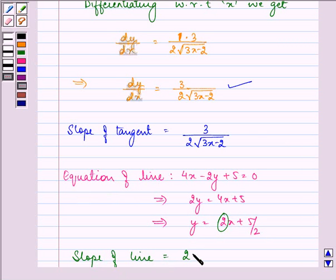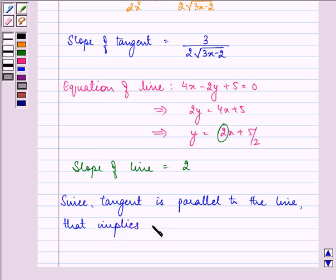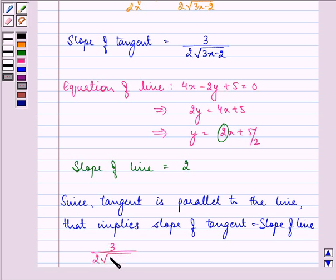Now, since the tangent is parallel to the line, slope of tangent is equal to slope of line. We have slope of tangent as 3 upon 2 into under root 3x minus 2. It will be equal to 2.